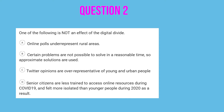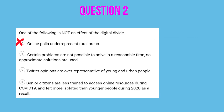Next question: which one of the following is not an effect of the digital divide? Option A: online polls underrepresent rural areas. This is true — rural areas have less access to computers, so they are underrepresented. So this is not what we're looking for. Option B: certain problems are not possible to solve in a reasonable time, so approximate solutions are used. This has nothing to do with digital divide — undecidable problems are things we need to learn for the APCSP exam, but not related to digital divide. So this is the answer we're looking for.